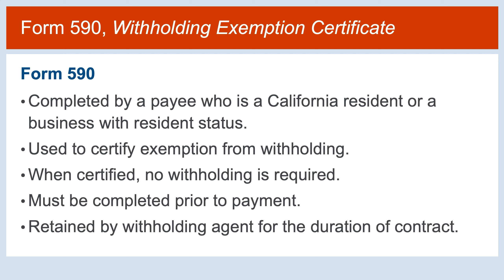Form 590 is completed by a payee who is a California resident or is considered a California entity. This form is used to certify exemption from withholding. When certified, no withholding is required. Please note the form must be completed and provided to the withholding agent prior to the payment.